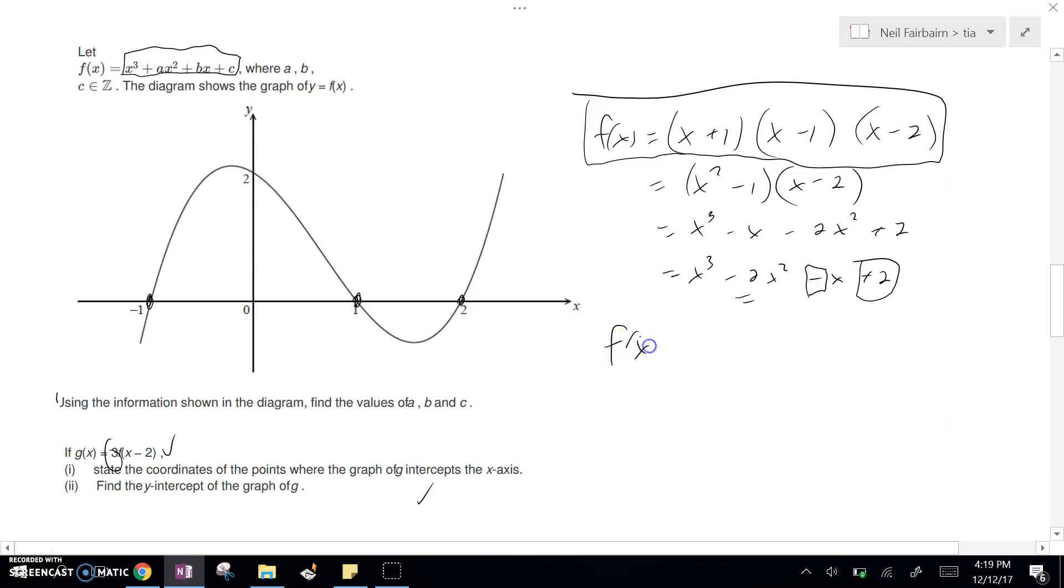So what I've got here is f of x is equal to, I'm going to multiply by three, because that's what it says I have to do, and then I'm going to change all my x's to x minus two. So x minus two plus one, x minus two minus one, and x minus two minus two. And this is equal to three times x minus one, x minus three, and x minus four.